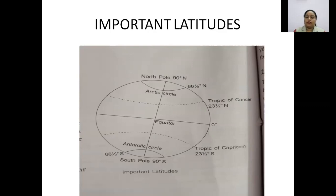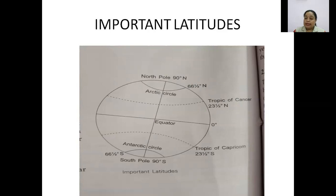Second comes the Tropic of Cancer. The Tropic of Cancer is an important latitude in the northern hemisphere and it is located at the angular distance of 23 and a half degrees north. Then comes the Tropic of Capricorn, which lies in the southern hemisphere. It is an important parallel in the southern hemisphere and is located at the angular distance of 23 and a half degrees south.